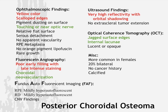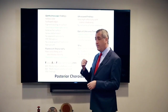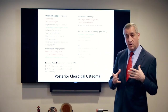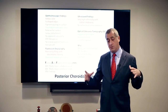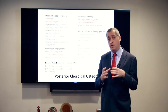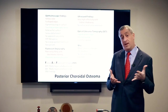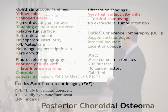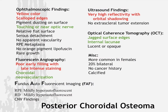The last tumor we're going to talk about is choroidal osteoma. Patients are often quite surprised that they can develop bone inside their eye — that's what it is, a piece of bone underneath the retina. They tend to be yellow, with scalloped edges unlike the other tumors, and relatively flat, often next to the optic nerve. On fluorescein, they can develop new blood vessels at the edges. The fluorescein that's injected goes through the osteoma, but since it's bone, it doesn't absorb very well and once it's in there it can't get out easily either.